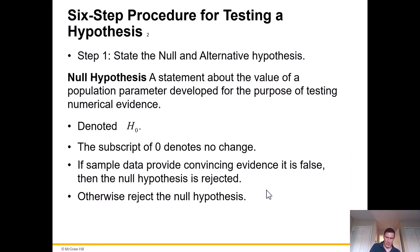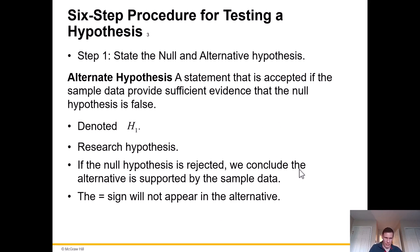Step one is to state the null and alternative hypothesis. The null hypothesis is a statement about the value of a population parameter developed for the purpose of testing numerical evidence, denoted H-sub-zero, where the subscript denotes no change. If sample data provide convincing evidence it's false, the null hypothesis is rejected. The alternative hypothesis, H-sub-1, is accepted if the sample data provide sufficient evidence that the null is false — this is the research hypothesis, and the equal sign will not appear in the alternative.